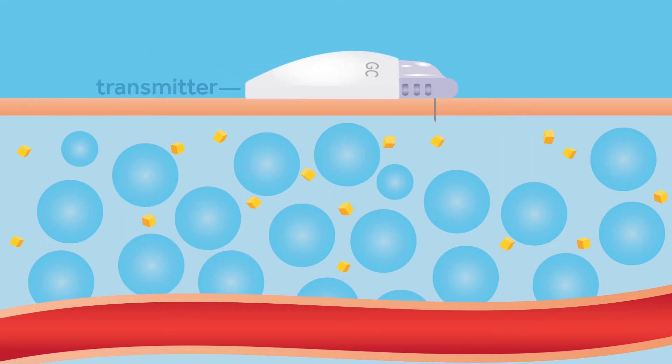The transmitter is connected to the sensor. The sensor then measures the glucose in the interstitial fluid and sends this information to the transmitter. The transmitter then wirelessly sends this data out to your device.